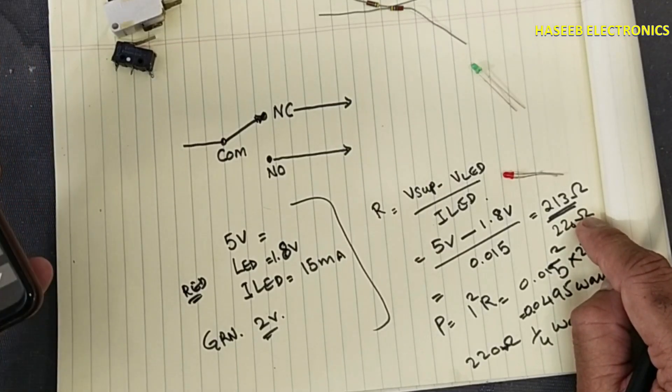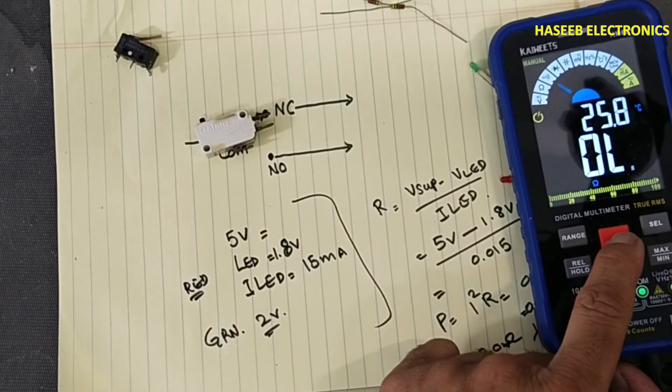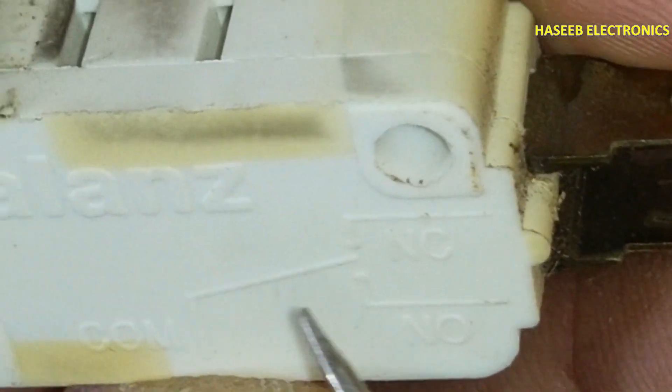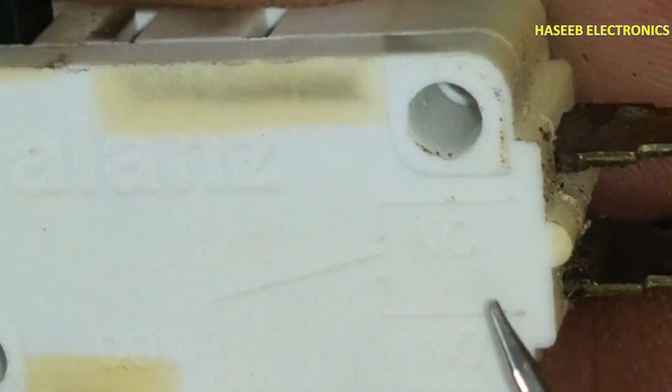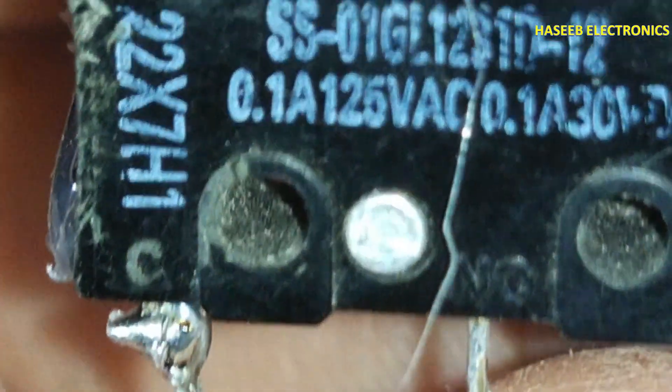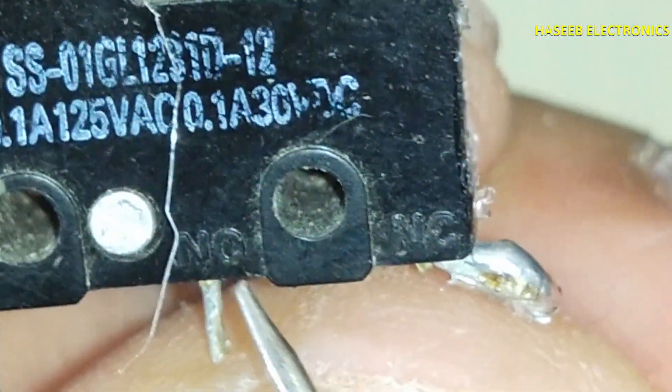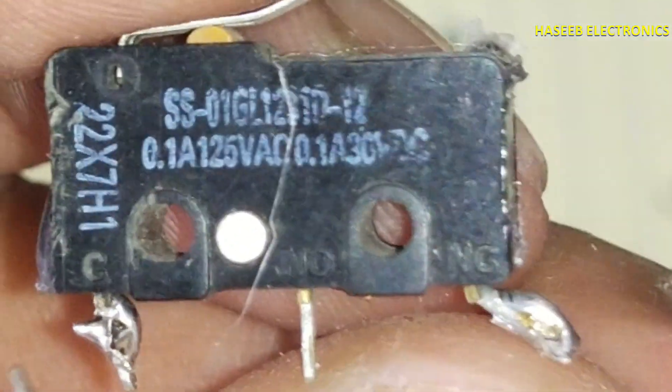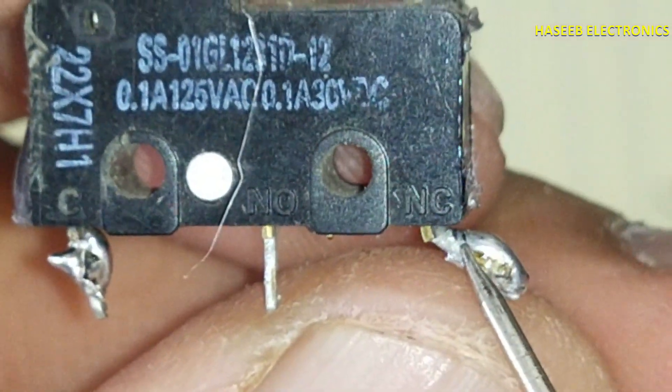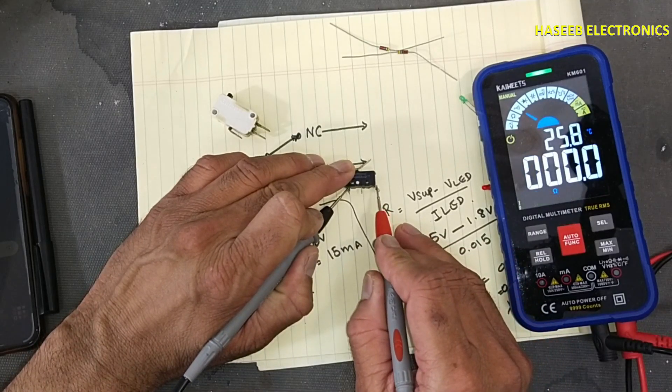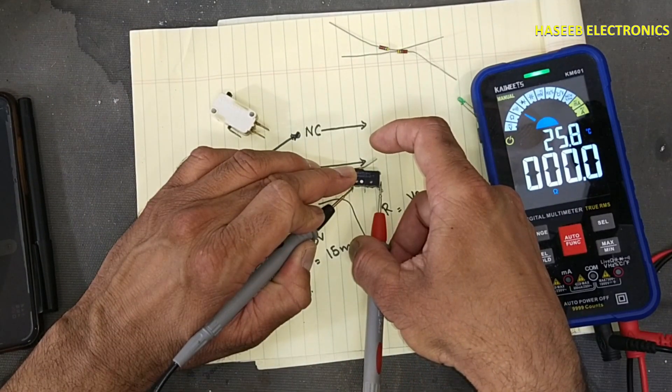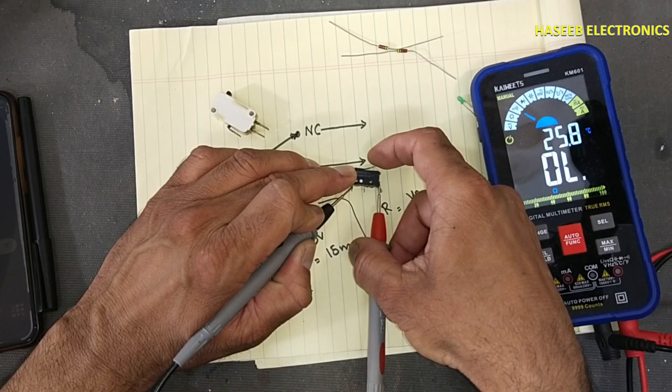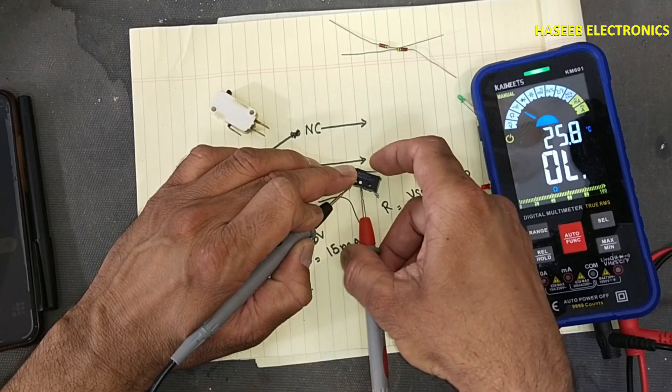There is marking on this switch: common, normally closed, normally open. When this switch is not pressed, the common point will make connection with NC. When we will press it, it will make connection with NO. In operative condition normally it is making connection with this one. When we will press it, it will open from this point and common will make connection with NO.